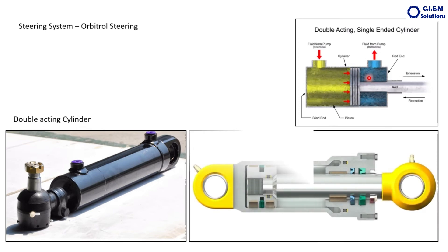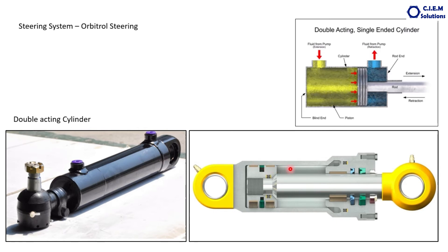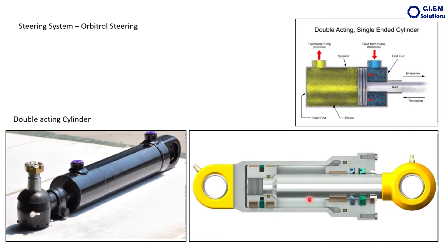When you cut the cylinder open, it looks like this. The gray outer part is the cylinder barrel. Inside there is the rod, the base end, the rod end, and the piston. The wiper seals provide sealing between the two chambers, and the rod seals prevent oil leakage to the outside. This is how the cylinder is constructed.